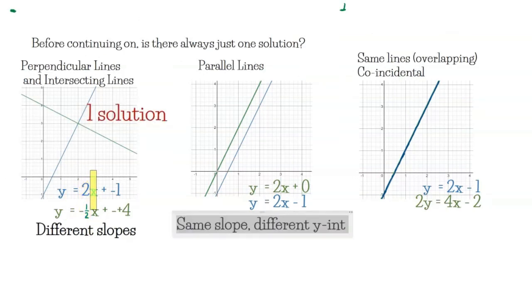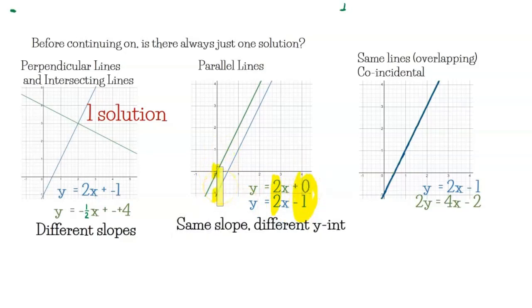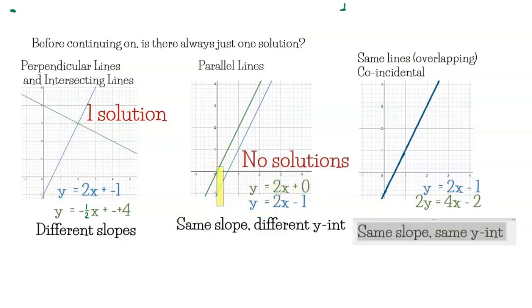For parallel lines, the slopes are exactly the same but the y-intercepts are different — one at 0 and the blue line at negative 1. Because they never cross, parallel lines have zero solutions.